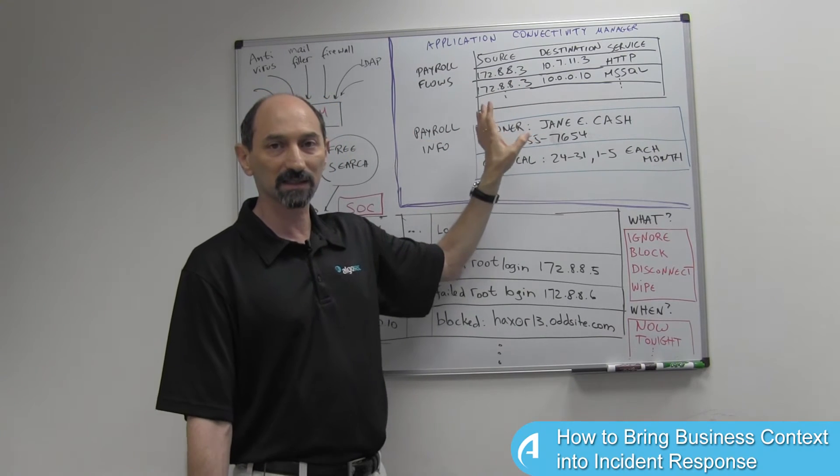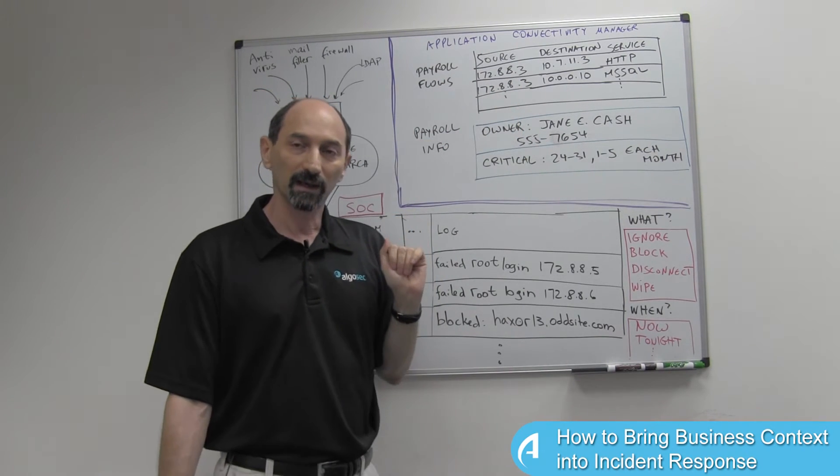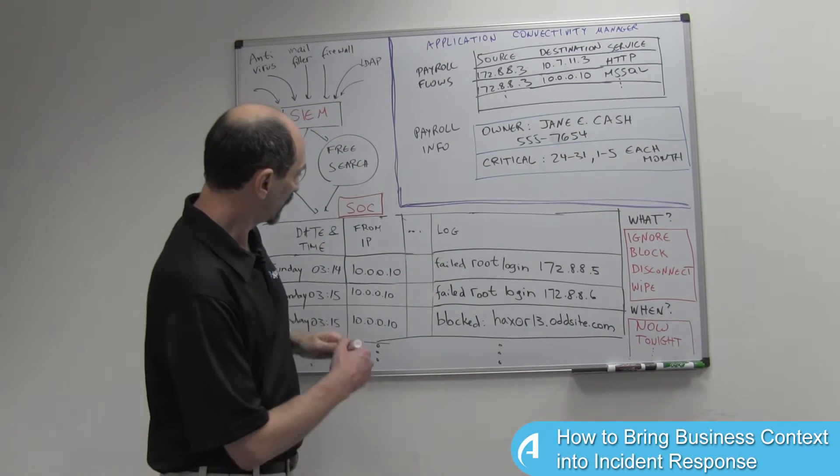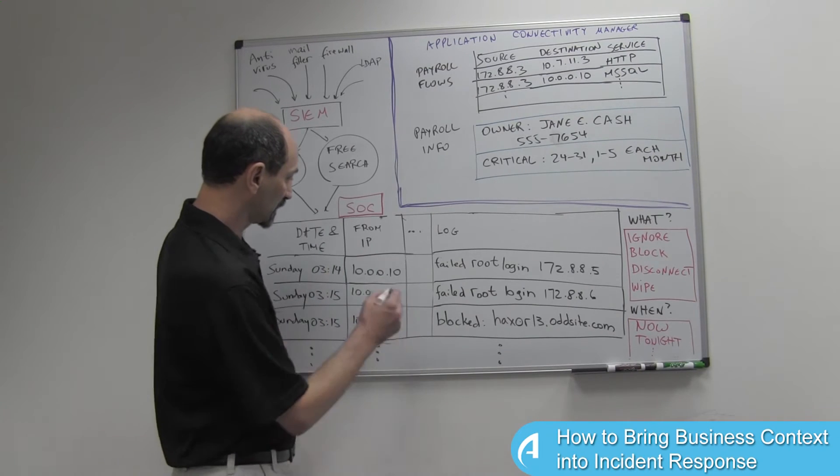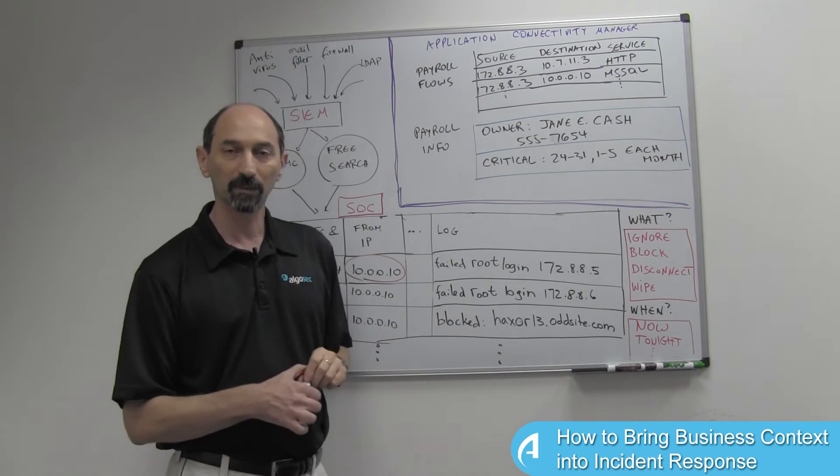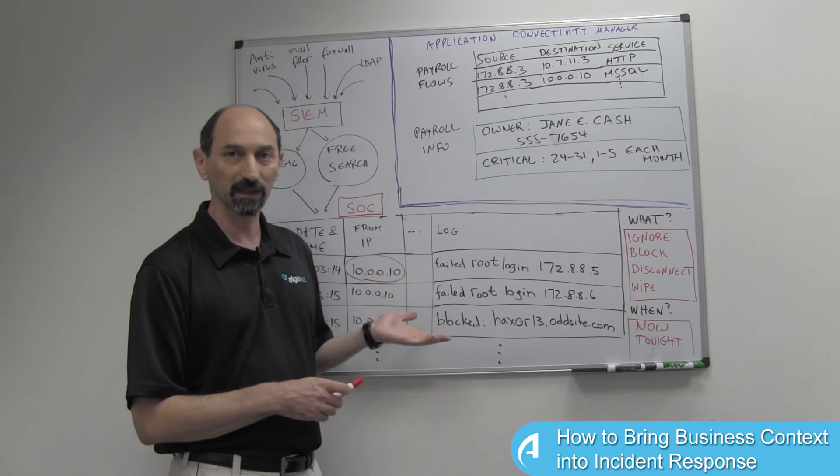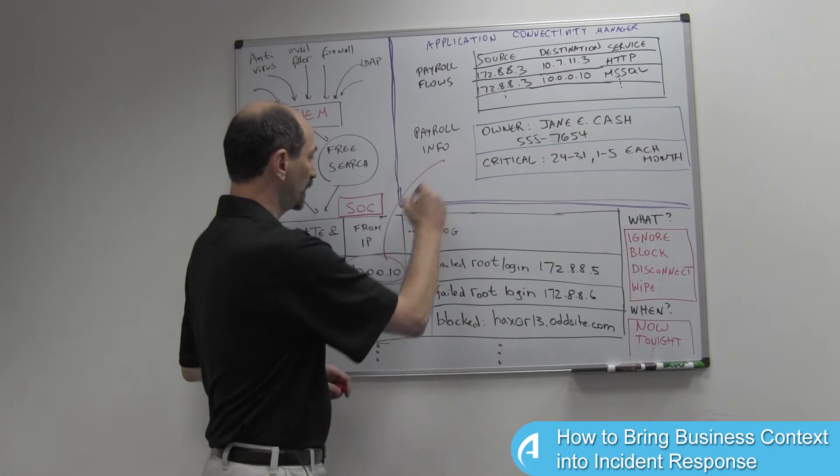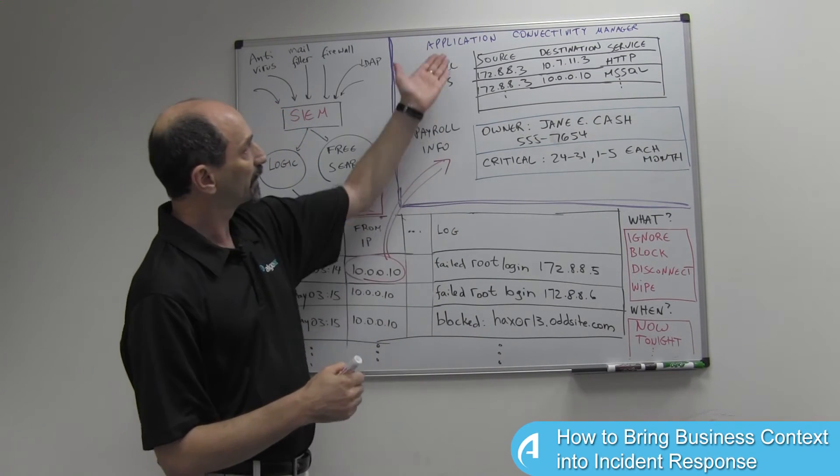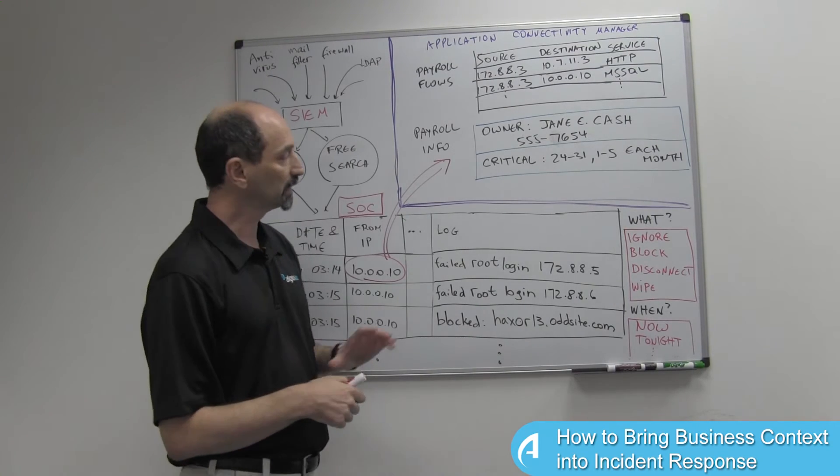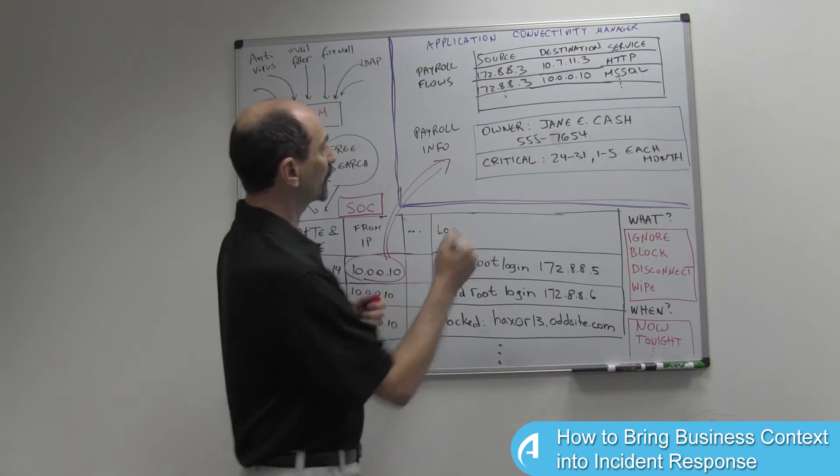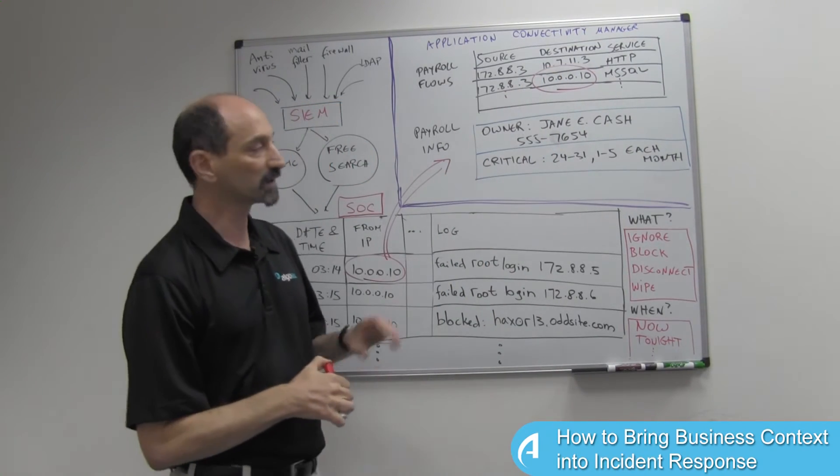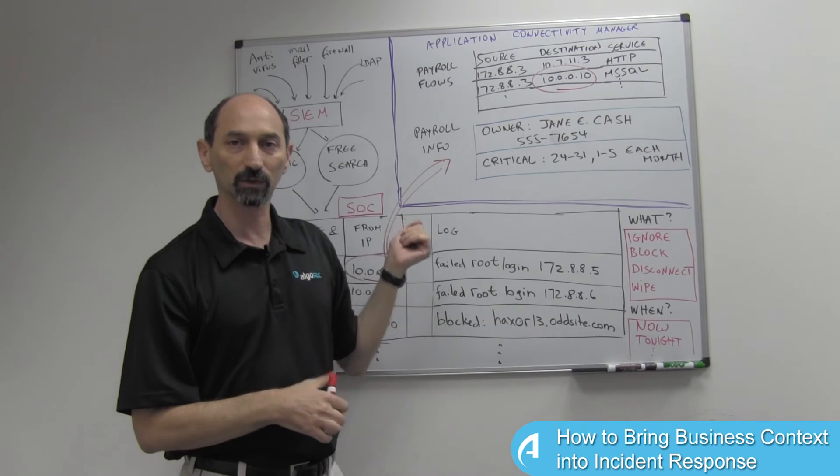This information does exist in the organization, and the point I'm trying to make is that it would be really useful if the people in the SOC, when they're investigating this incident, could look at this IP address that's apparently being attacked or is owned by malicious software and query the databases that the application connectivity manager has to identify that this particular IP address is really one of the servers that the payroll application relies on to do its job.